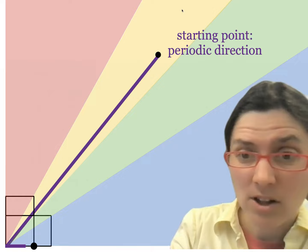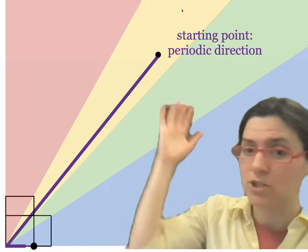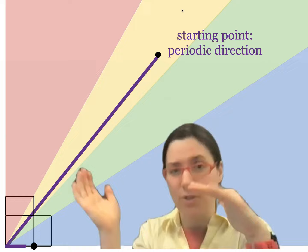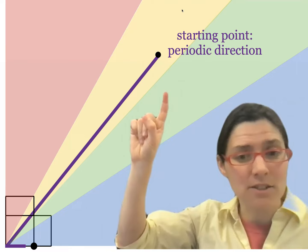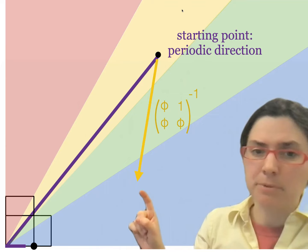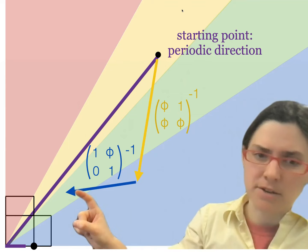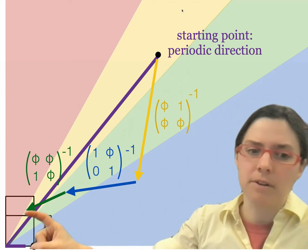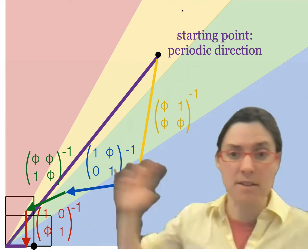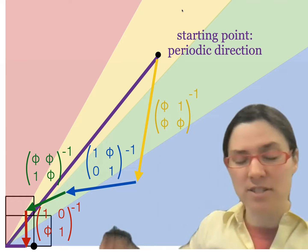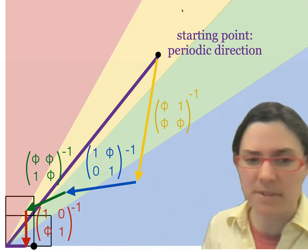Suppose I have a periodic direction on the golden L, which is closely related to a periodic direction on the regular pentagon due to our cut-and-paste between the two surfaces. I start with this periodic direction. I'm in the yellow sector, so I apply the inverse of the yellow matrix. Now I'm in the blue sector, apply the inverse of the blue matrix. Then the green sector inverse. Then the red sector inverse. If you start with a rational vector, in a finite number of steps you end up at the x-axis. In this case, five steps get us to (6/5, 0).